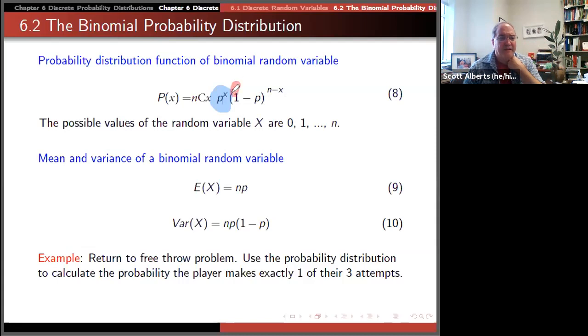If we start here with the p to the x, the idea there is that you're making x successes in a row. If you're going to make one of your three free throws you need to make a free throw for one of those. Then over here we have 1 minus p to the n minus x. The idea there is that 1 minus p to the n minus x. If you make x of your free throws, you're going to miss all the rest of them. So you make one free throw and you miss two. 81% chance you make a free throw, 19% you don't. So 0.19 to the second power is going to be that. So that takes care of these two numbers.